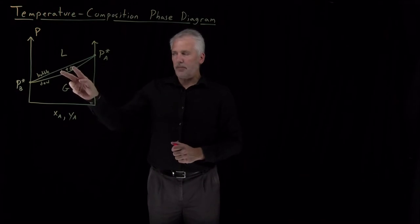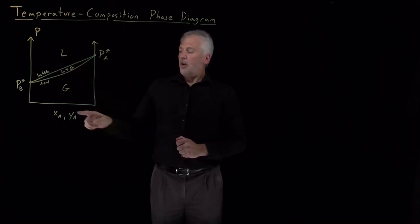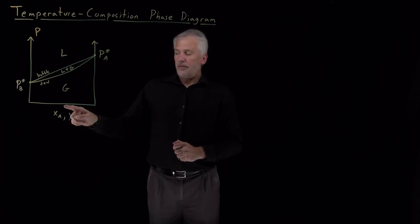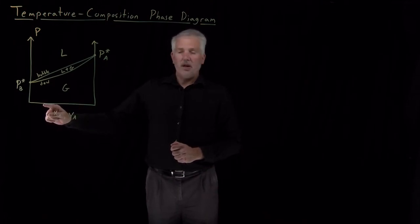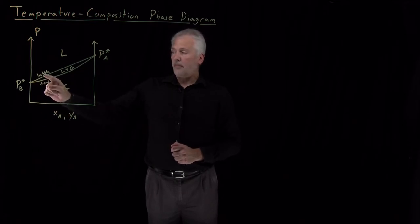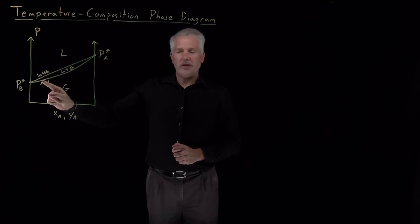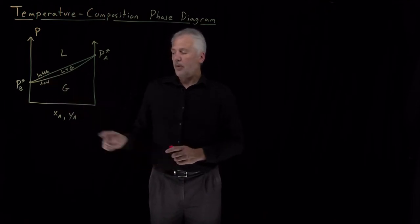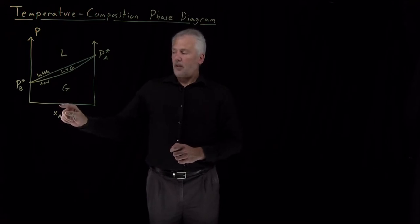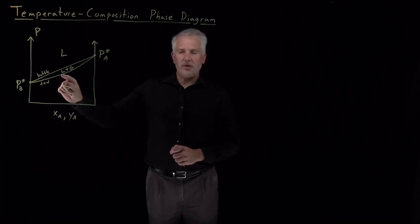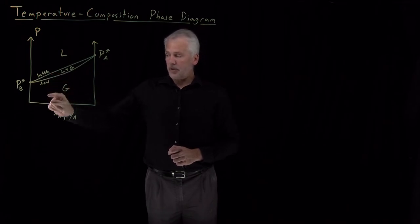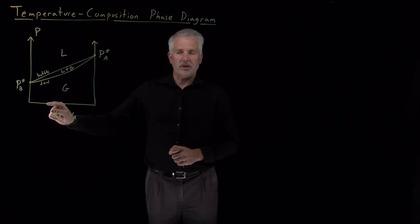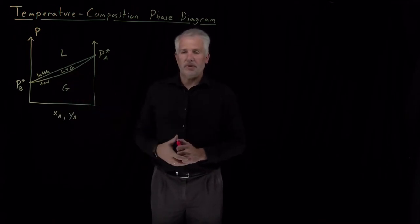It might be single phase or it might be phase coexistence. We can also use it to read off, for example, at what pressure a solution of a given composition will first exhibit vapor forming in the liquid, or first exhibit liquid condensing out of the vapor. Likewise, if I have a gas and compress it until I form the first droplet, I can read the composition of that liquid droplet from the liquid curve. There are many ways to use this pressure-composition phase diagram.